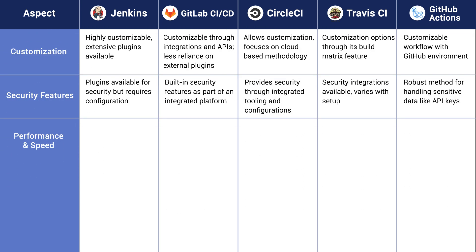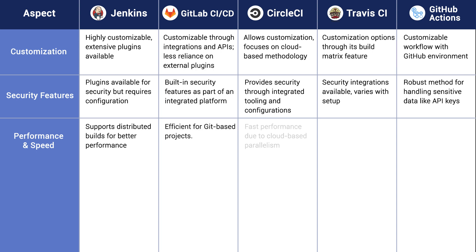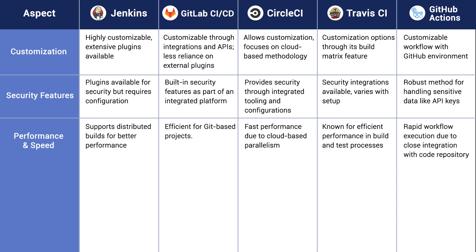What about performance and speed? Jenkins supports distributed builds for better performance. GitLab CI/CD is efficient for Git-based projects. CircleCI has fast performance due to its cloud-based parallelism. Travis CI is known for efficient performance in build and test processes. GitHub Actions has rapid workflow execution due to close integration with the code repository.